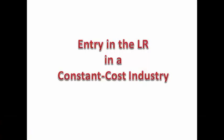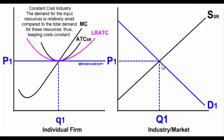Entry in the long run in a constant cost industry. Notice that the industry, the market, and the individual firm are in long run equilibrium. As demand increases in the industry or the market, this increases the price and the quantity in the industry or market.